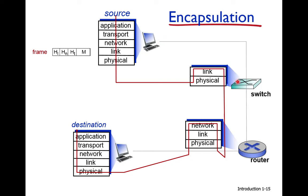The switch is working at layer 2. End systems have five layers: application, transport, network, link, and physical. The router has only three layers — physical, link, and network — because it is in the core network. There is no transport and application layer on the router because users sit on end systems to access the internet, not on the router. The link layer delivers data from source machine to the first switch, and from the switch to the router.